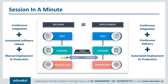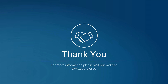Continuous delivery is a capability you must have, and continuous deployment is an option you might choose based on your product. In short: continuous delivery equals continuous integration plus automated release plus manual deployment to production. Continuous deployment equals continuous integration plus continuous delivery plus automated deployment to production. That's all for today's session — thank you and have a great day.